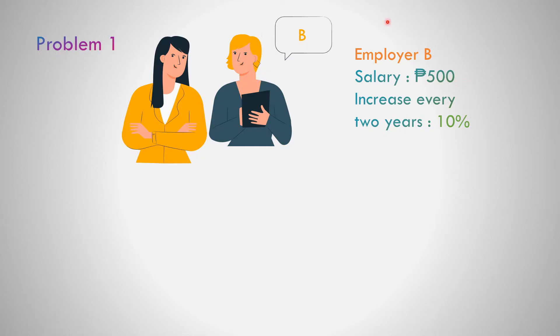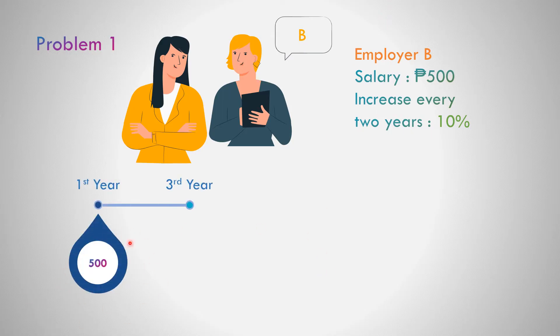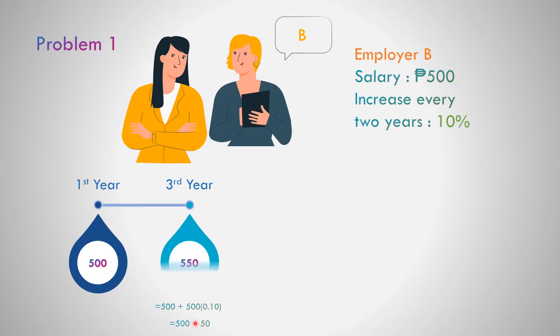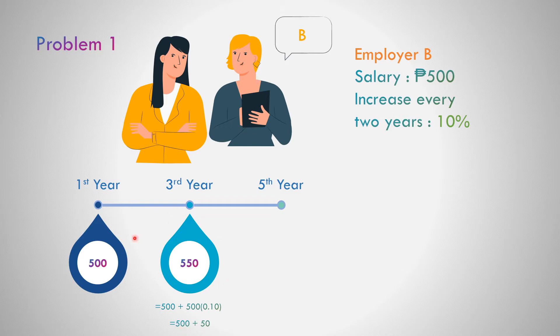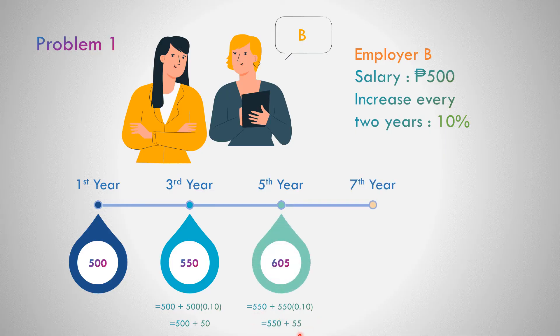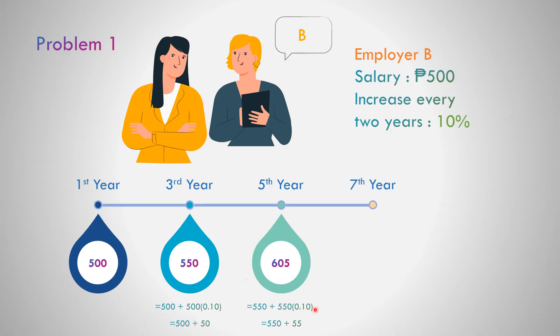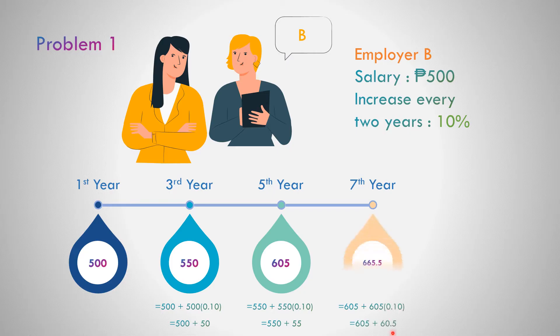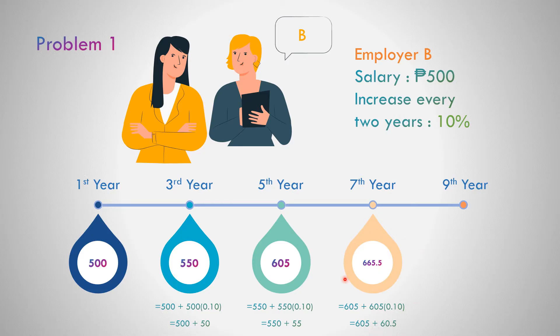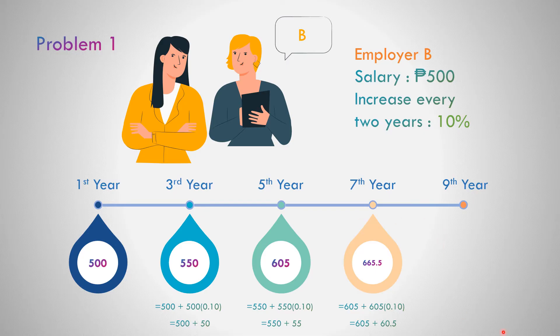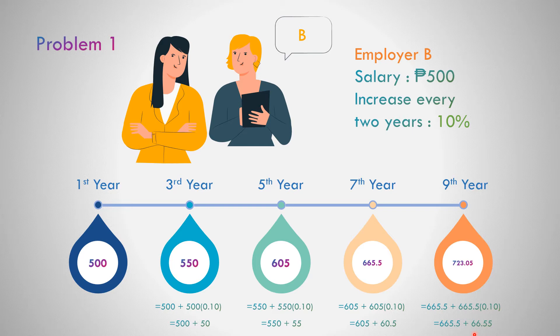Let us compare to Employer B. The salary is 500 and increase every two years is 10%. In the first year, that is 500. 10% of 500 is 50, so that becomes 500 times 0.10 is 50 plus 500 equals 550. 10% of 550 is 55, so 550 times 0.10 is 55 plus 550 equals 605. Then 60.5 plus 605 equals 665.5.